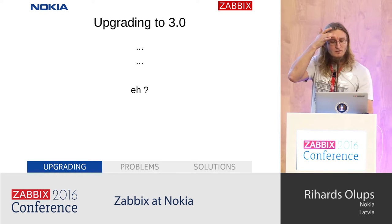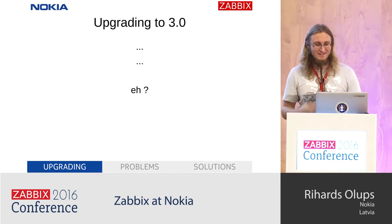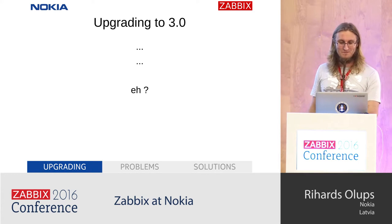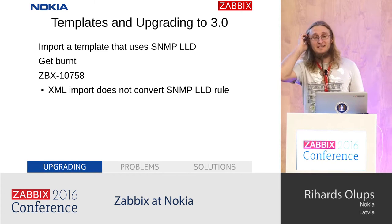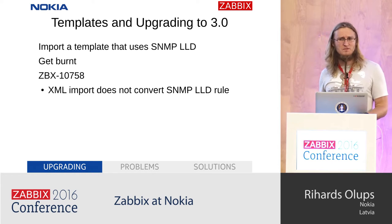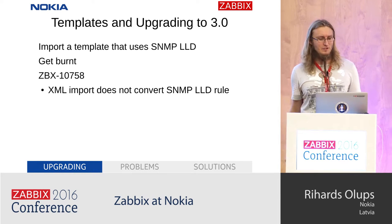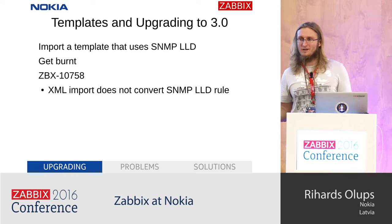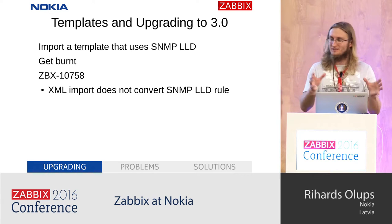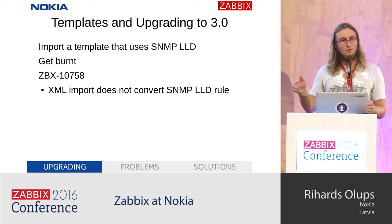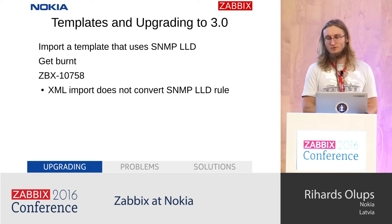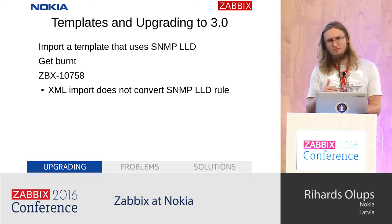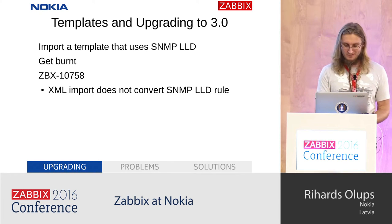Upgrading to 3.0 — yeah, we are thinking about it. We've investigated slightly and see some potential problems, like the mentioned link loss on the simple graph page. Another problem: if you're importing an SNMP template that uses LLD, you get burned because the XML import doesn't convert the LLD rule syntax and it doesn't work — you have to update it manually for all the LLD rules. So we have a short list of things we'll have to pay attention to when we get to 3.0.